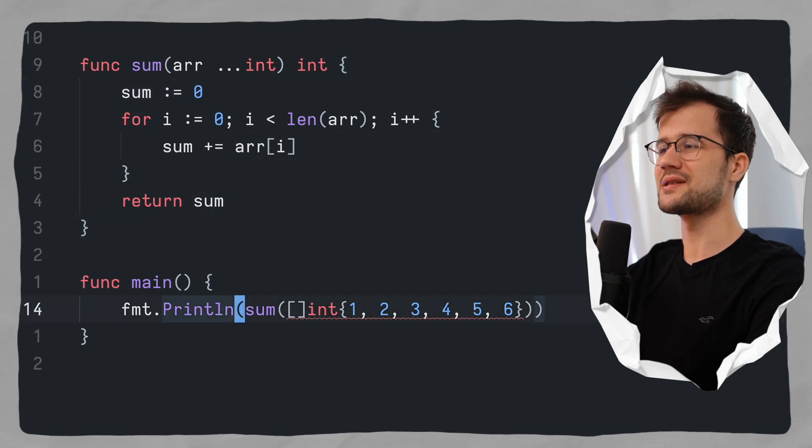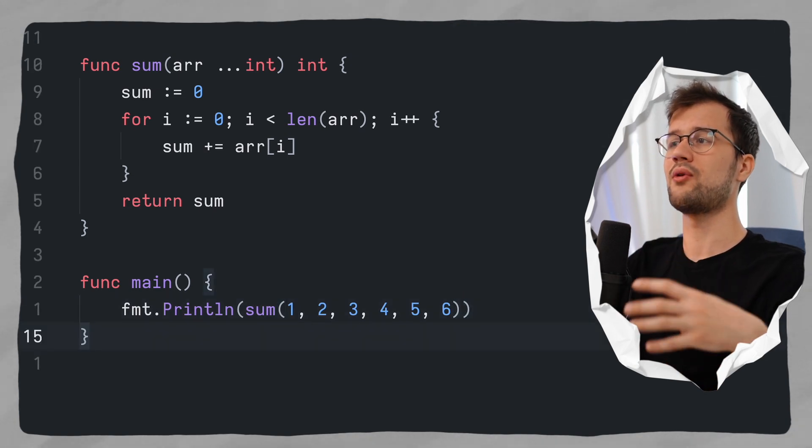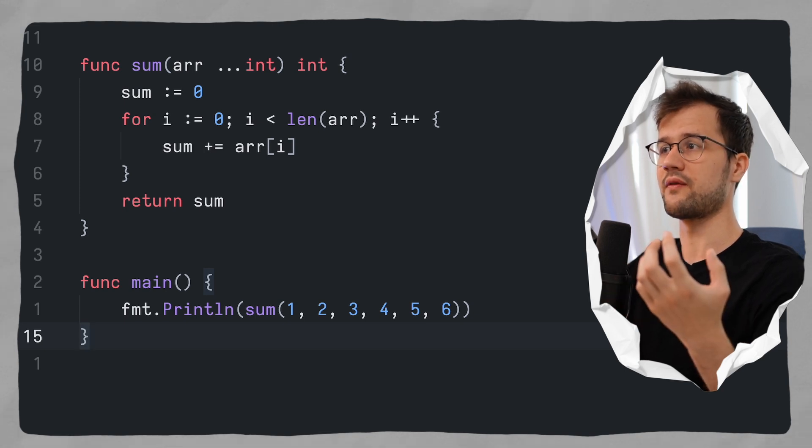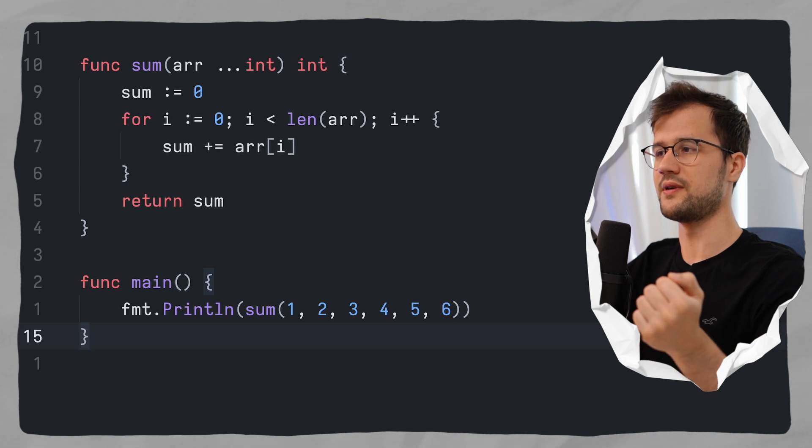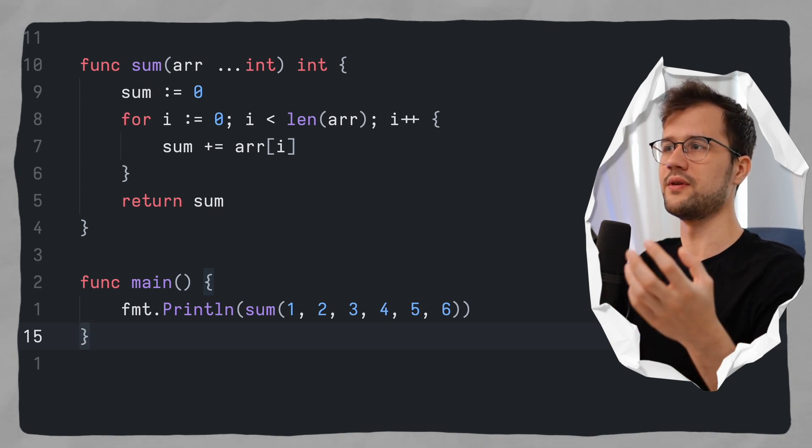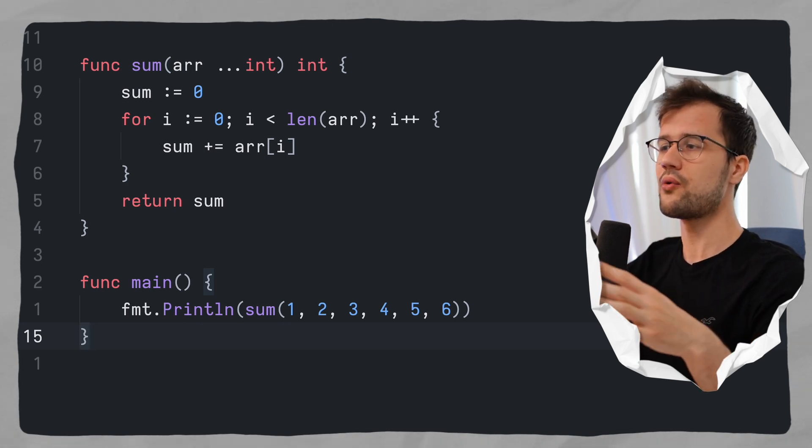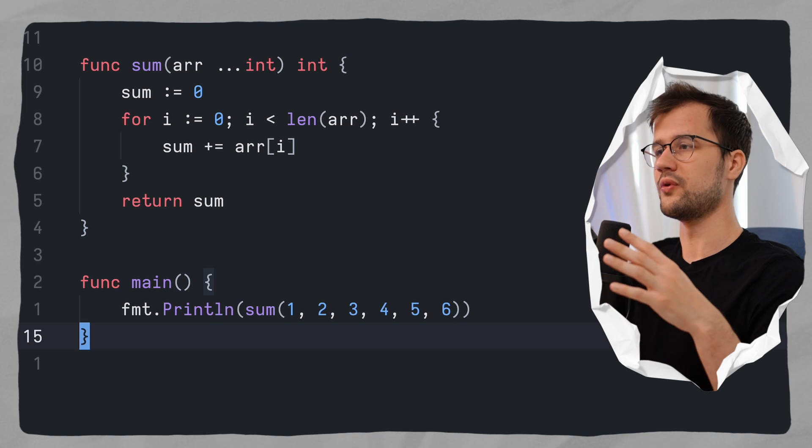So what we can do here in our sum function is we can get rid of the slice definition. So what we can say here instead is just define 1, 2, 3, 4, 5, 6 as the arguments. Because golang now knows that our sum function is a variadic function and therefore it takes in all the arguments we want to specify. So now the length is kind of unknown and the user of this function or the developer of this function can define their arguments in any order and also with any length.